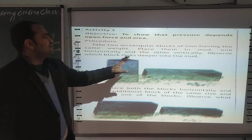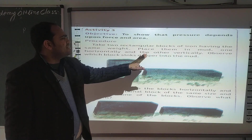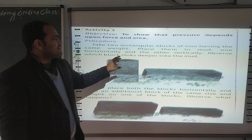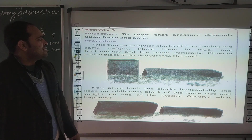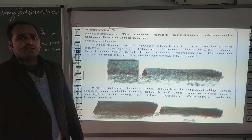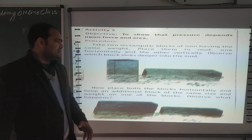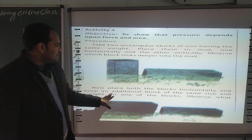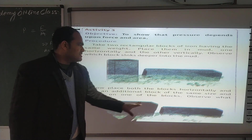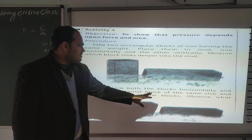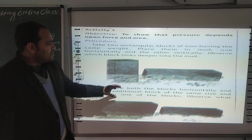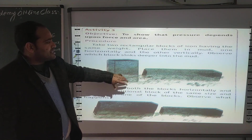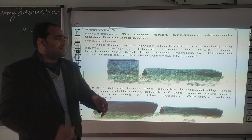Take two rectangular blocks of iron having the same weight. Place them in mud — one horizontally and other vertically। Observe which block sinks deeper into the mud। कौन सा block मद में ज्यादा अंदर तक रहेगा? Now place both blocks horizontally and keep an additional block of the same size and weight on one of the blocks. Observe what happens। तो जिसका area कम रहेगा वहाँ pressure ज्यादा पड़ेगा, और जिसका area ज्यादा होगा वहाँ pressure कम पड़ेगा।